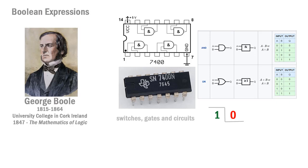We use transistors today for those switches and gates; in the old days we used vacuum tubes. We can think of everything in a computer as having voltage or not having voltage, and we refer to that in binary code as ones and zeros — one meaning there's voltage or electronic current, zero meaning there's not. Those ones and zeros in terms of hardware are really asking the question of presence or absence of an electronic signal.